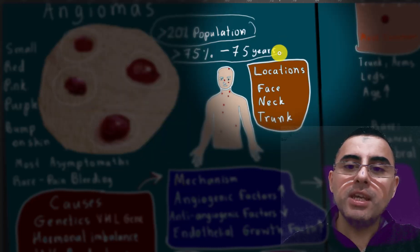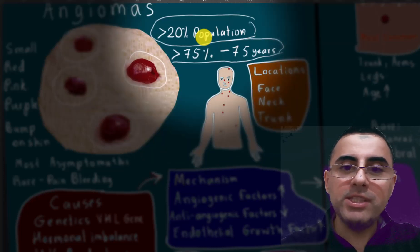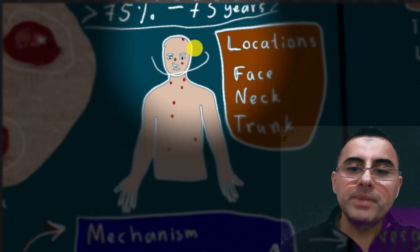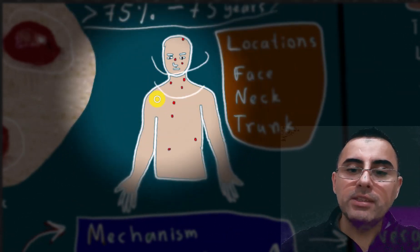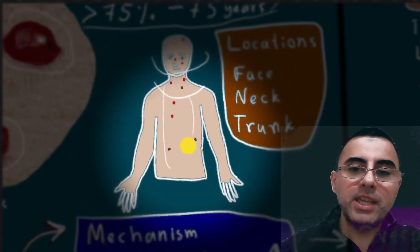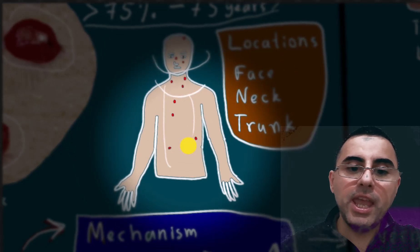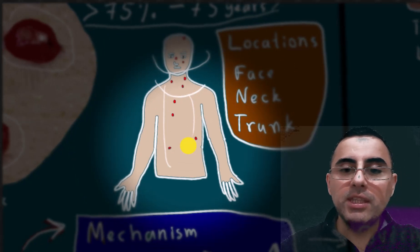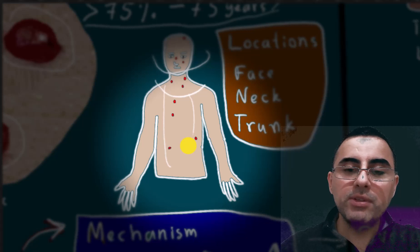This means the risk of angiomas increases with age. The most common locations are face, neck, and trunk, but they can occur in any part of the body, including internal organs.